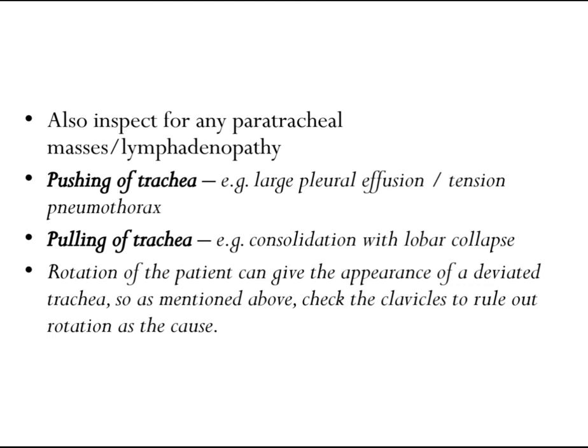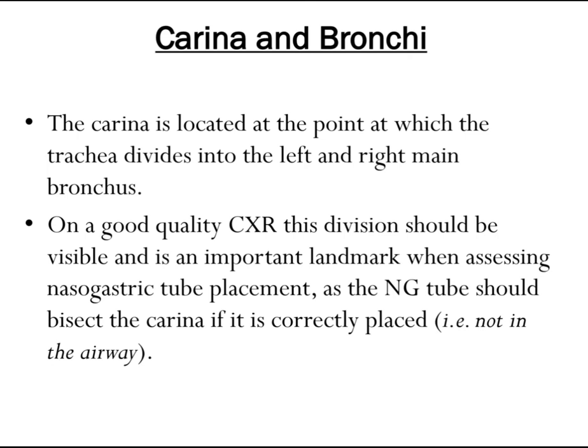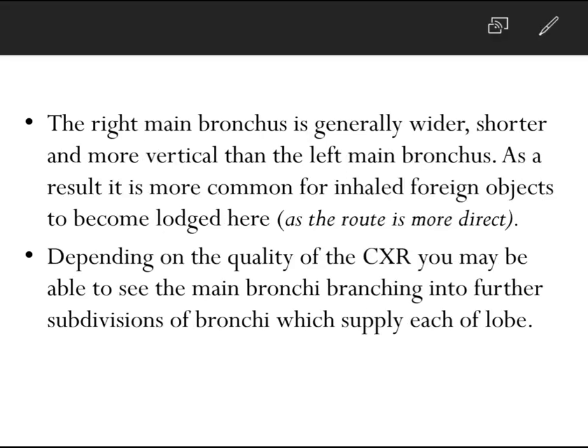Rotation of the patient can give the appearance of a deviated trachea, so check the clavicles to rule out rotation as the cause. The carina is located at the point at which the trachea divides into the left and right main bronchus. On a good quality chest x-ray this division should be visible and is an important landmark when assessing nasogastric tube placement, as the tube should bisect the carina if correctly placed. The right main bronchus is generally wider, shorter, and more vertical than the left.